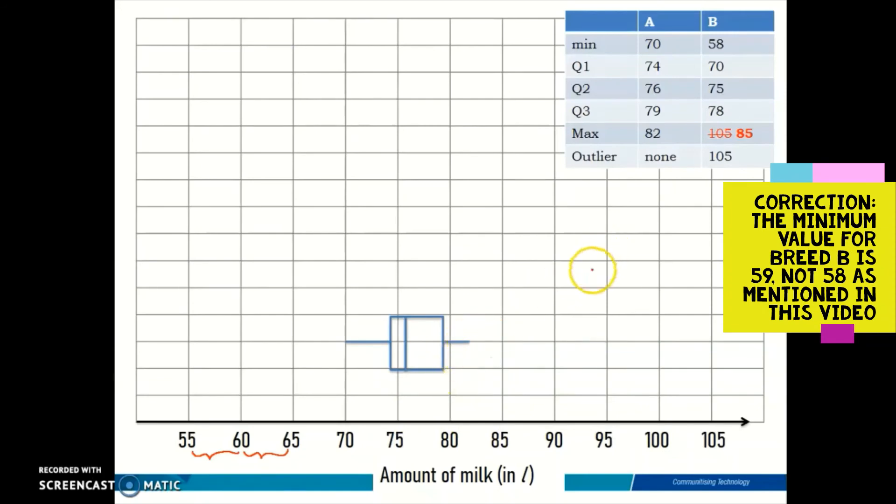Moving on, let's continue to draw the box plot for breed B. This is how it would look like. The minimum is 58, quartile 1 is 70, quartile 2 is 75, quartile 3 is 78, and the maximum is 85. And not to forget, you also need to plot the outlier.